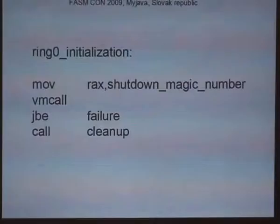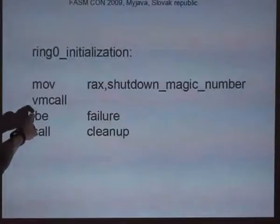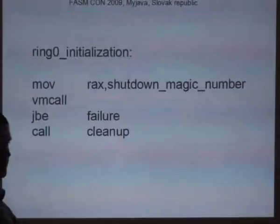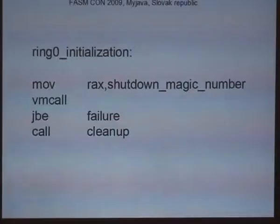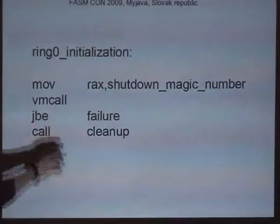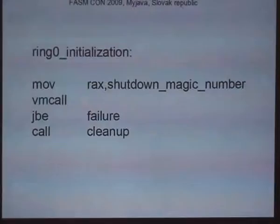Here is the code sample of how RING0 may initialize the shutdown. It places, for example, some magic value in the EAX register and then calls the VMCALL instruction. If we have a multiprocessor machine, all CPUs running under virtualization must execute this. If the instruction succeeds, we continue; if the zero or carry flag are set, then it failed. After a successful shutdown, we perform some cleanup.